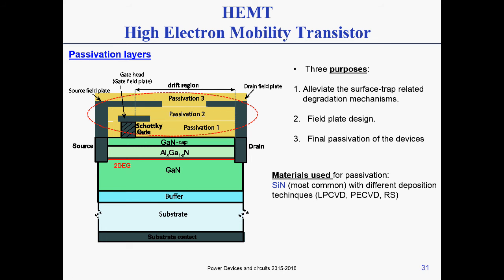Passivation layers — we know why we have them. One reason is that we need field plates to release the electric field and improve the offset performance of the device. Another reason is that the first passivation layer gives better properties to the surface of the device. The properties of this passivation affect the top interface layer, which in this case is the GaN cap. The second passivation is simply a panel passivation typical of every power device. The most common material used is silicon nitride, grown by either low-pressure or plasma-enhanced CVD.